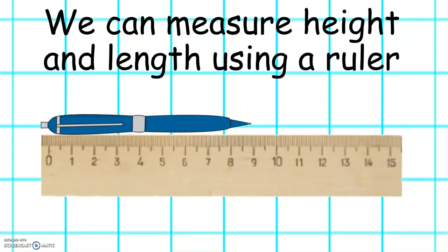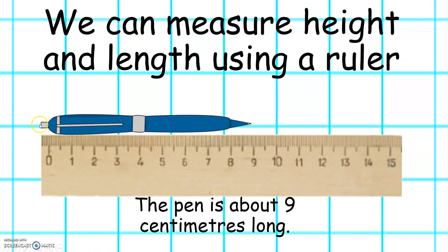We can also measure height and length using a ruler. When we measure using a ruler, we have to make sure the object is at the zero at the start of the ruler. And this pen is about nine centimeters long.